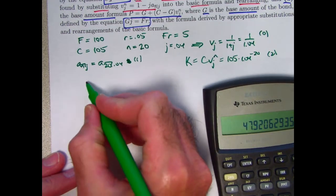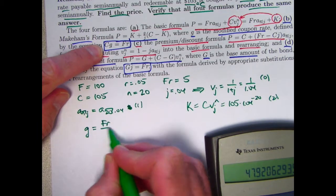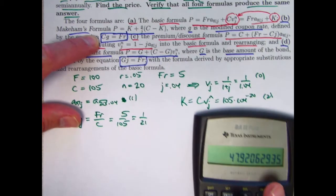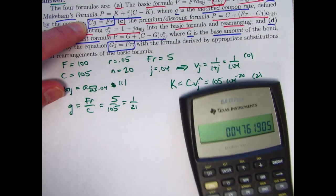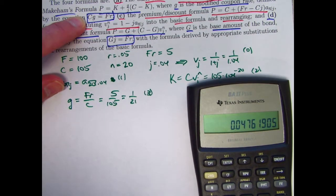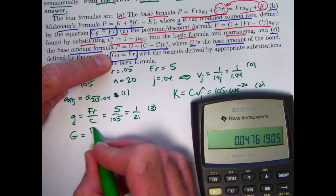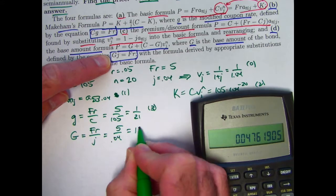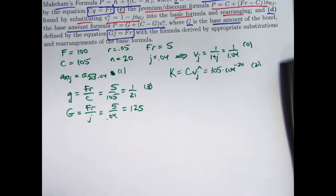Two more quantities to calculate. The two G's, little g and capital G. Little g would be FR over C. That will be 5 over 105, which does make a nice fraction, 1 21st. But we're probably going to want to store that as a decimal in the calculator. 21, take its reciprocal. I'll store that in register 3. 0.04761905. Stored in register 3. Capital G, the base amount, is going to be F times R over J. That's going to be 5 over 0.04. And that turns out to equal 125. You can check. And that's pretty simple. I won't bother storing that.